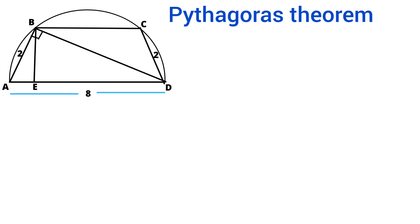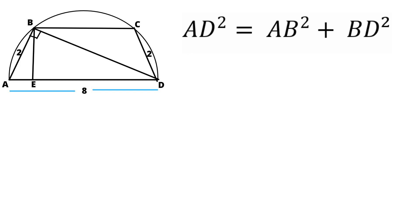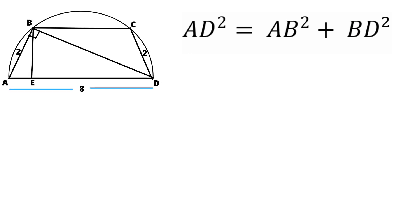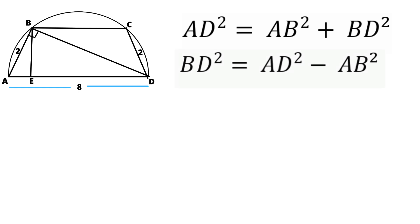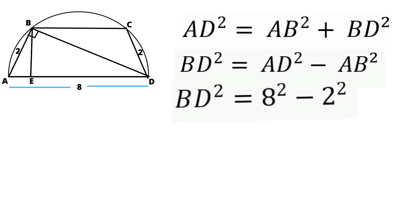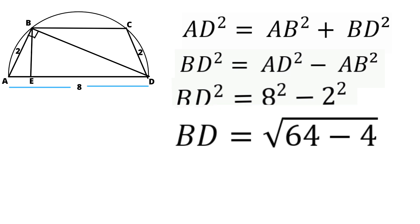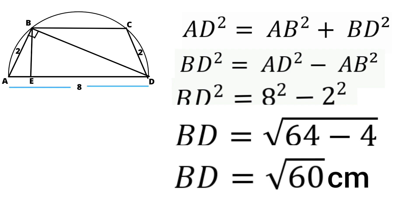By Pythagoras theorem, AD² = AB² + BD², so BD² = AD² − AB² = 8² − 2² = 64 − 4. Therefore, BD = √60 cm.